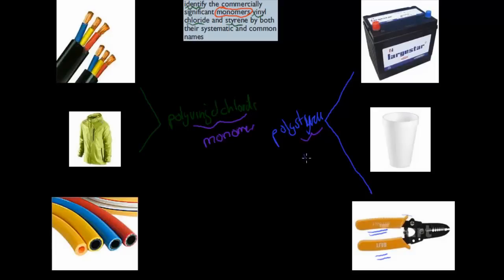And this is what I'll go over in this video. I will actually cover how these products get produced, because there's a dot point which says how do the properties of polyvinyl chloride and polystyrene relate to the uses — I'll talk about that in a future video. But for now I'll just talk about vinyl chloride and styrene.